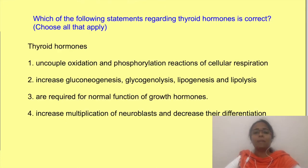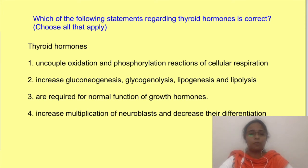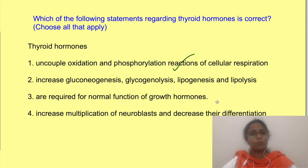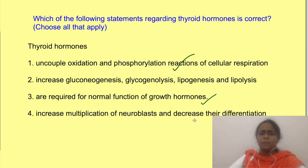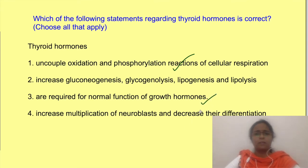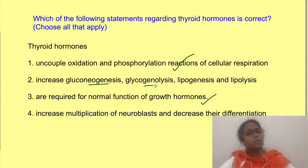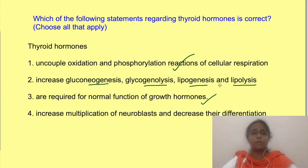Now let's come back to the question which we saw at the beginning of the video. The first and third statements are straightforward and we discussed them in the video, so they are correct statements. For the second statement, we discussed that thyroid hormones speed up the metabolic cycles for both the supply as well as the utilization of ATP — so it speeds up both the synthetic as well as the breakdown limbs of fuel metabolism. Therefore, the second statement is also correct.